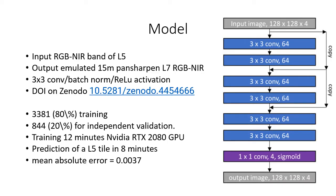Here is our model. The input is a 4-band L5 image with RGB and near bands. The input image goes through a series of convolutional operations and returns an output of 4 bands, which are our L5 bands emulated at 15 meter resolution. We used 80% of the data for training and 20% for validation. You can find the code of our model on Zenodo for more details.